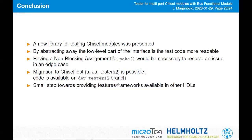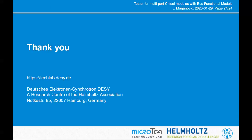In conclusion, this is a new library to test Chisel modules by abstracting away the low-level bit-toggling parts, which can make test code more readable. Having a non-blocking assignment for poke would be necessary to resolve the issues in this edge case. The code is on the development branch, and I would argue this is a small step towards providing features which are known in other HDLs. With this, I'd like to thank you for your attention and thank the organizers for organizing this workshop.